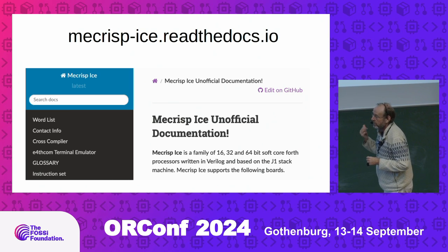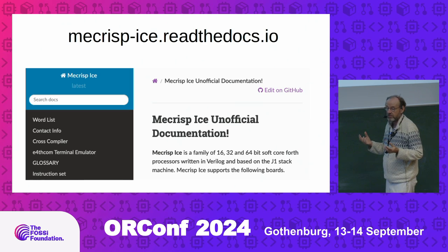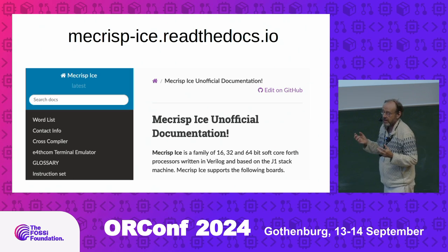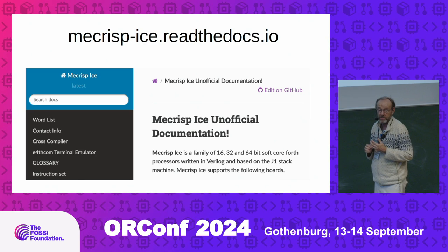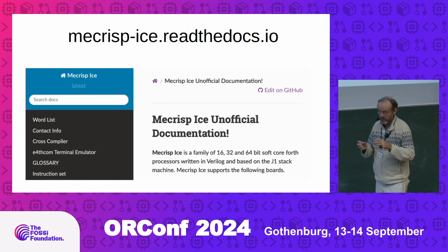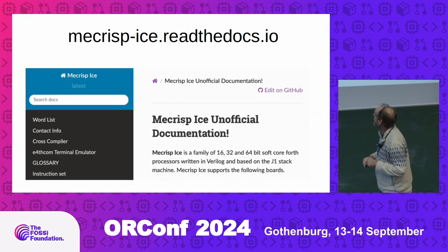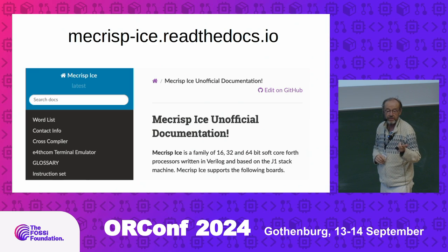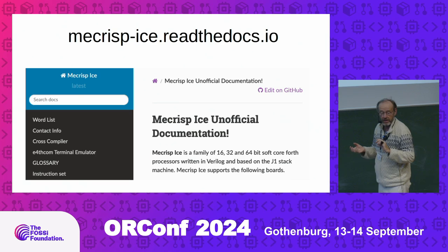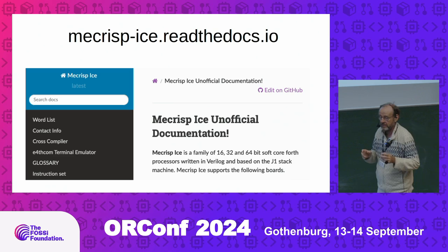There's a family of stack processors called Mecrisp. There are actually four different ones. Mecrisp Stellaris runs on ARM processors. Tethered Mecrisp lets you develop on your desktop and just send signals out to your device; when you're all done, you compile and download it to your device when done debugging. There's also one for RISC-V and I'm working with Mecrisp ICE, which is for FPGAs. I actually wrote the documentation on this. The developer is German and brilliant, but he has four different groups writing all the documentation in English for all of these.